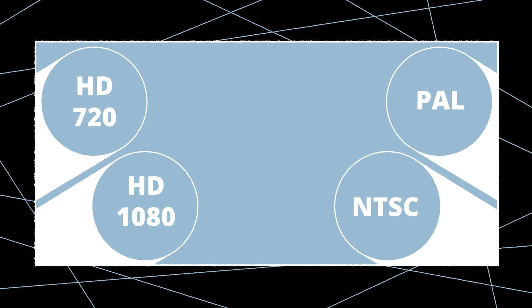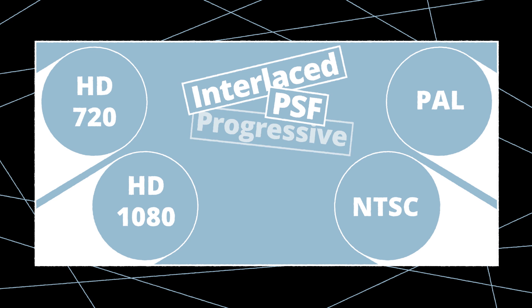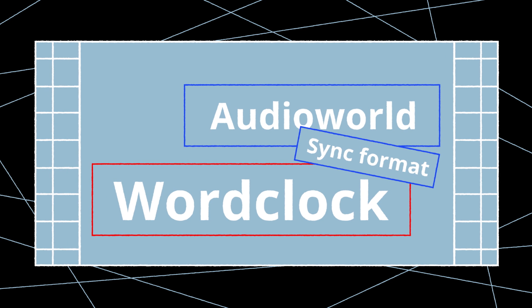These specifications include PAL, NTSC, HD 720 and 1080p, PSF or interlaced. Anything beyond that is unspecified, such as 48 frames per second used in the Hobbit. In the audio world, the sync format is called word clock and is specified by sample rate.